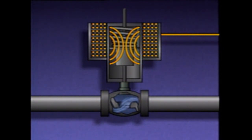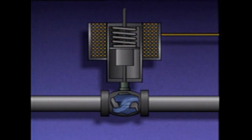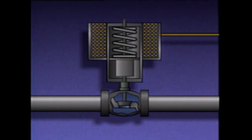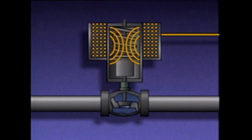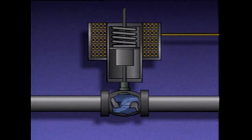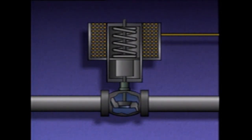When current flow through the coil stops, the magnetic field is lost. This allows the spring to push the armature and stem back to their original positions and closes the valve. When current flow starts or stops, the movement of the armature is almost instantaneous. When current flow starts, the actuator will fully open the valve, and when current flow stops, it will fully close the valve.